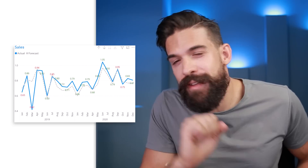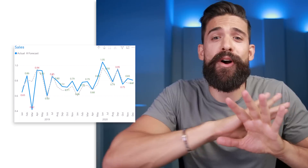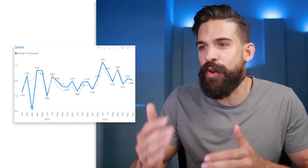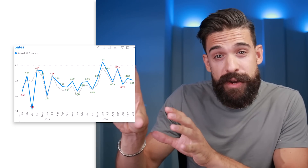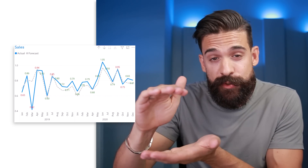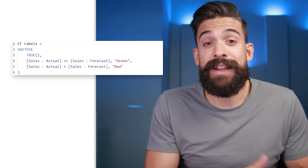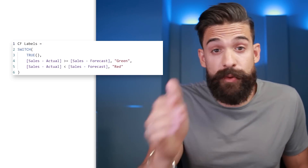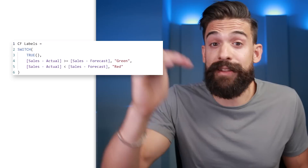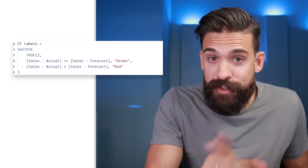I think we can still do a little better. At the moment it's a bit much to show all of the labels — it's hard to know what to focus on. Maybe we only want to focus on the parts where the difference between actual sales and the forecast is above a certain threshold. How can we adjust the measure to make that work?